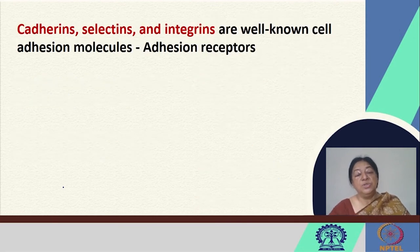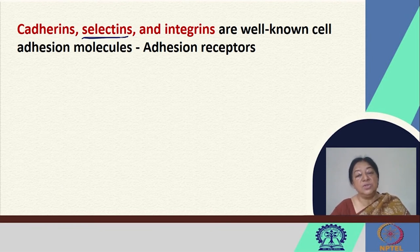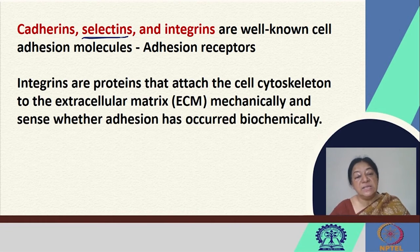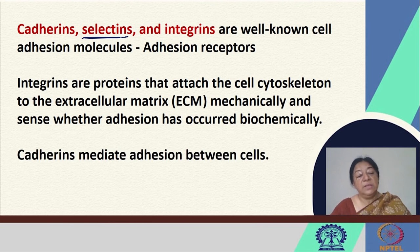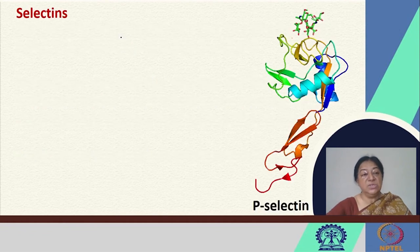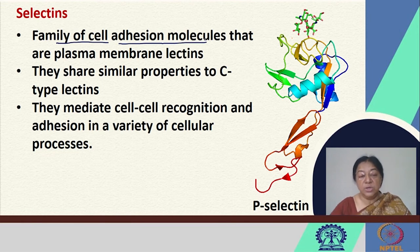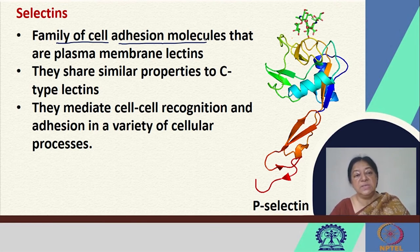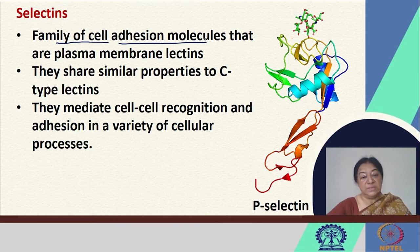Other proteins also known as lectins include the selectins. The cadherins, selectins, and integrins are all well-known cell adhesion molecules. Integrins attach the cell's cytoskeleton to the extracellular matrix mechanically and sense whether adhesion has occurred biochemically. Cadherins mediate adhesion between cells. Selectins are a family of cell adhesion molecules that are plasma membrane lectins sharing similar properties with C-type lectins, mediating cell-cell recognition and adhesion in a variety of cellular processes.